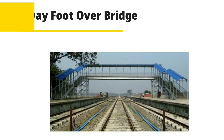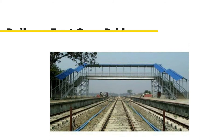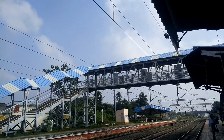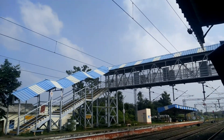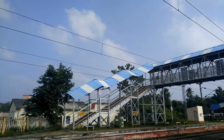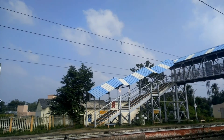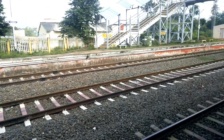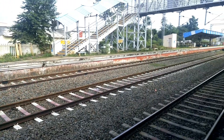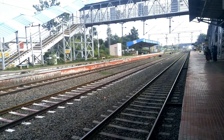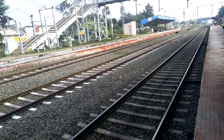The next component is the railway foot bridge. The bridge which connects different platforms at a particular station is called a railway foot bridge. It can be used by passengers to pass over the railway track from one side to another.